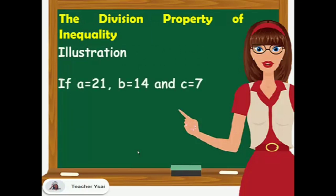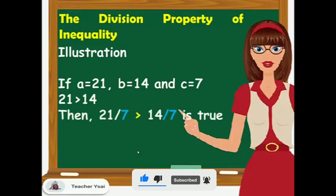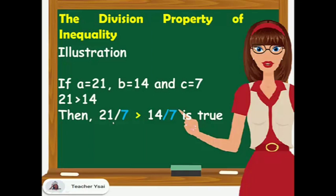For example, if A equals 21, B equals 14, and C equals 7, we know that 21 is greater than 14. If we divide 7 from both sides of the inequality, that's 21 divided by 7 is greater than 14 divided by 7. Since 21 divided by 7 is 3 and 14 divided by 7 is 2, and we know that 3 is greater than 2.